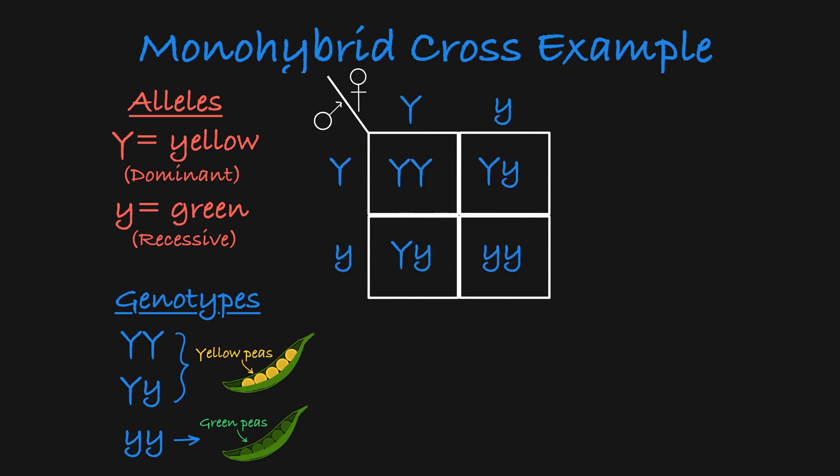we can see that one quarter of their offspring will be homozygous dominant, two quarters or one half of their offspring will be heterozygous, and one quarter of their offspring will be homozygous recessive.